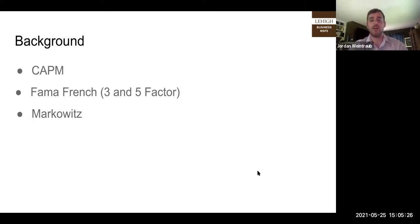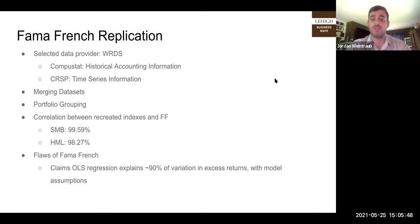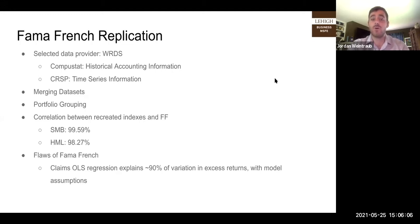Now that we've covered the background, we can start diving in. An important part is to replicate Fama-French's studies. We had access to the Wharton database — the Wharton Research Data Science Portal — which provides CompuStat data for accounting information and CRSP data for time series trading information like stock prices, closing dates, and volume. We merged the two datasets so we could mix accounting metrics with stock portfolio data, then grouped them by different size subsets.